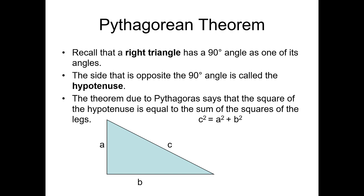For right triangles, we have what we call the Pythagorean theorem. Now we have to recall that a right triangle has a 90 degree angle as one of its angles. The side that is opposite the 90 degree angle is called the hypotenuse. So this one, the letter C is what we call the hypotenuse.